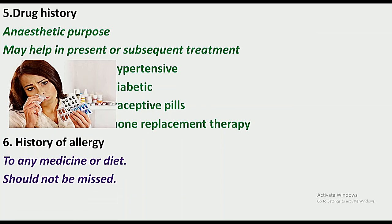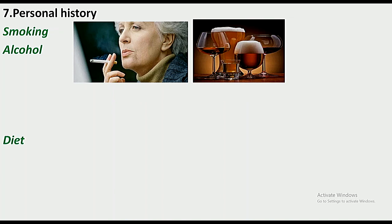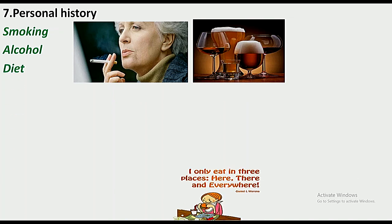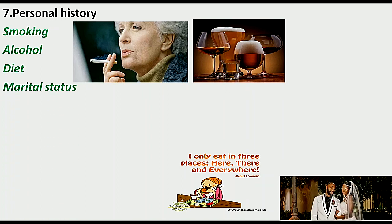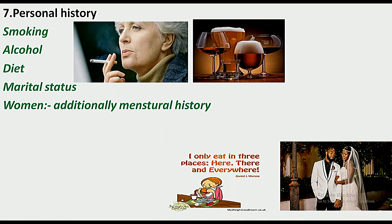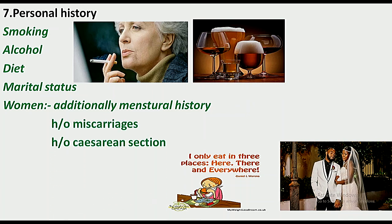History of allergy is very important — giving the same medication again to a patient may lead to complications. Allergy to any medicine or food should not be missed. Personal history is also very important: whether the patient smokes, takes alcohol, the kind of diet they follow, and marital status. In women, menstrual history should additionally be taken.